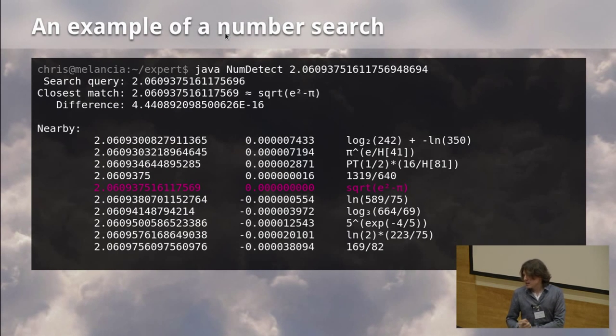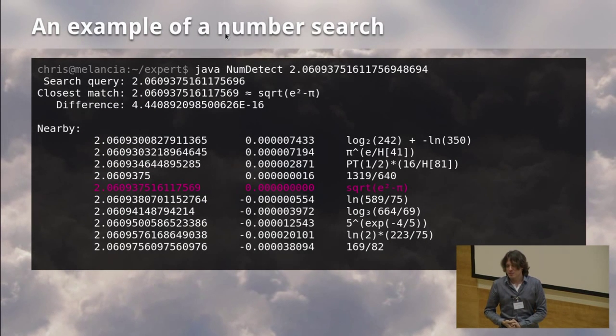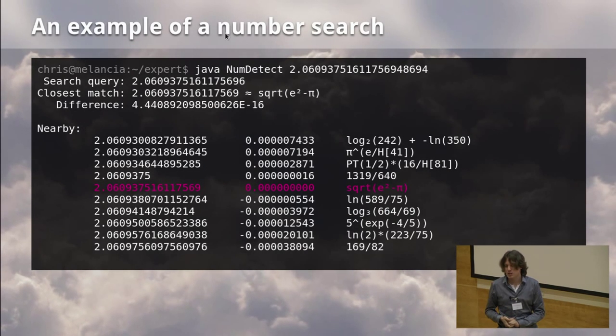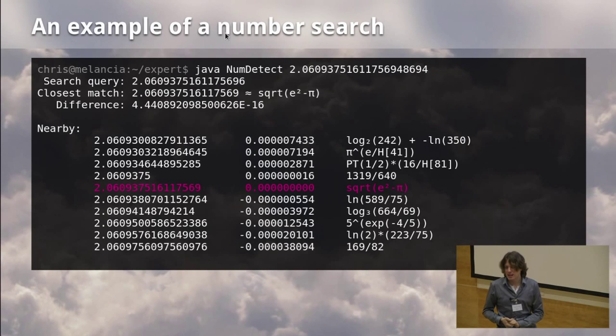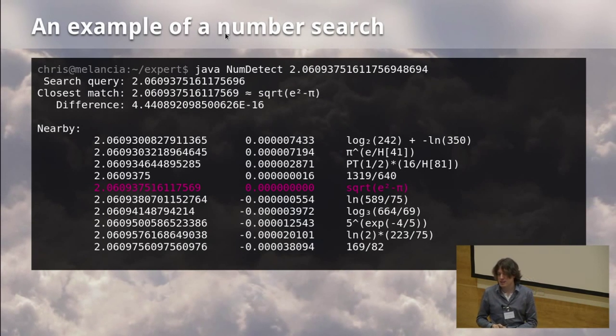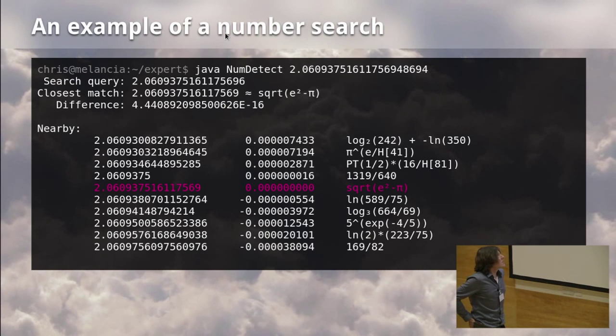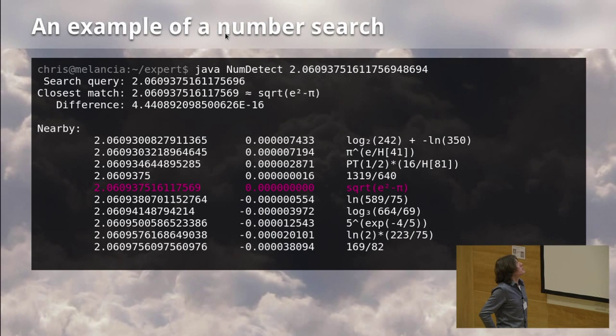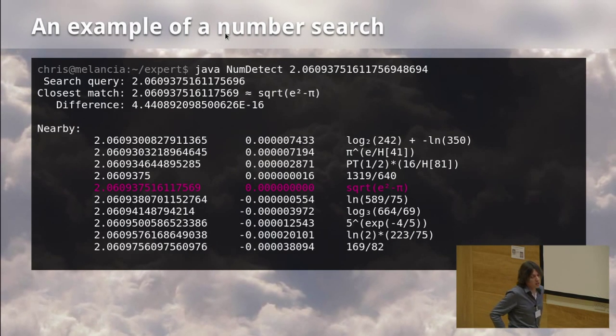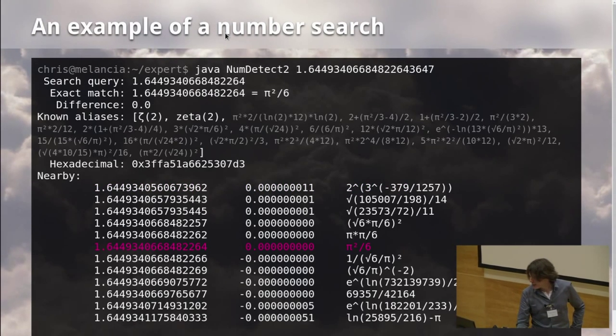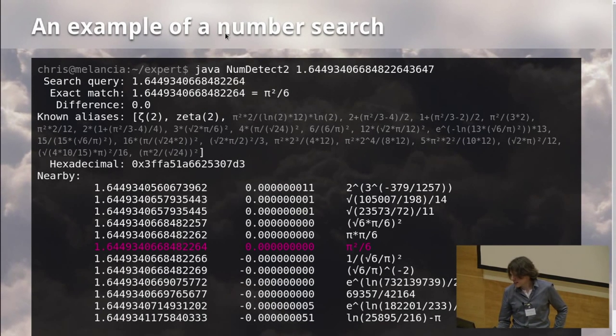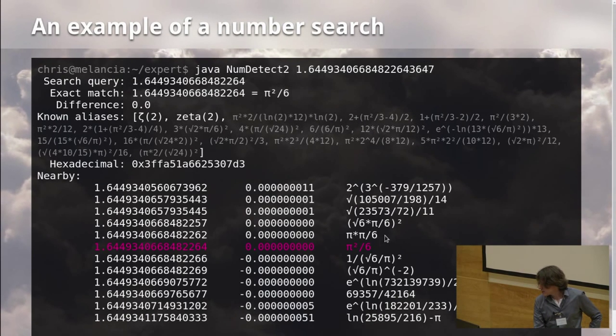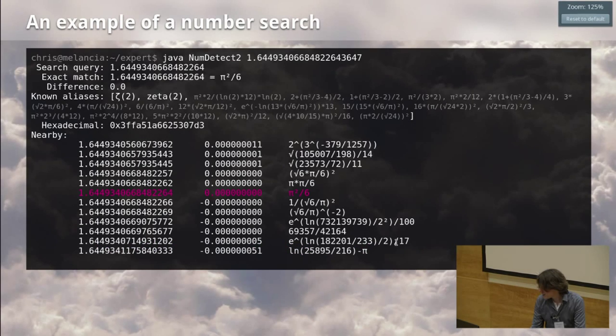Now here's an example of running this inverse calculator, which is a nice little tool, and you simply type in the number, and within a second or so, you get an answer on the screen that looks like this. It also tells you nearby matches, which means that you can sort of see the near misses of hypotheses it considered but discarded. Here's another example. This is pi squared over 6, and a curious thing you might see here is that it sort of appears twice, right?